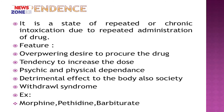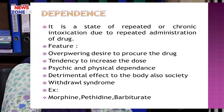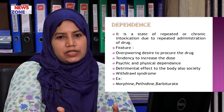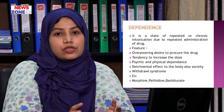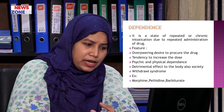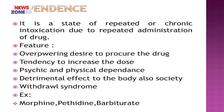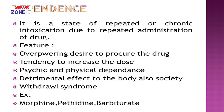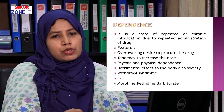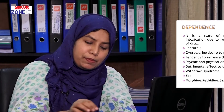Now, the features of dependence. There is an overpowering desire of the patient to take the drug — they become very eager and feel unwell without it. There is a tendency to increase the dose, and there is both physical and psychological dependence. The person feels physically unwell without the drug. There is a detrimental effect to the body and to society, as the person may create social problems. Withdrawal syndrome is also seen. Examples are morphine, pethidine, and barbiturates — morphine-addicted people are known to cause social disturbance.